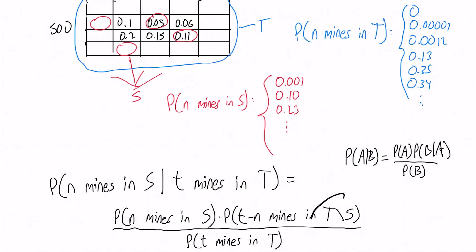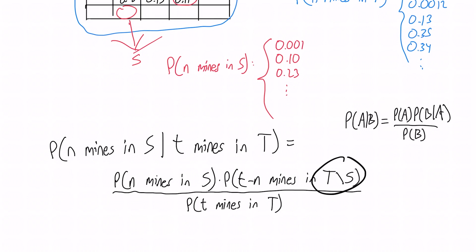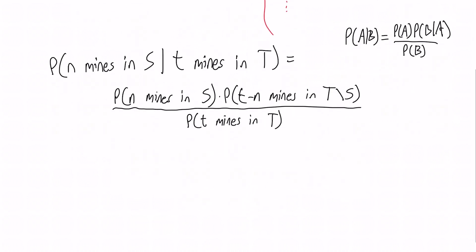However, that's going to run too long for T without S, because T without S is a very large set. It's up to 25,000 minus 500. So how do we do this?